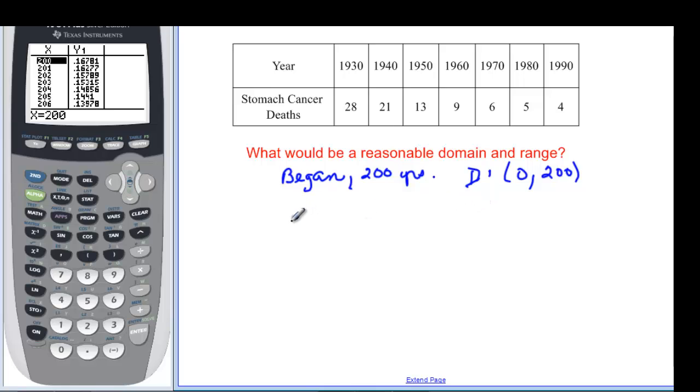For our range, we know that it started out with 28 per 100,000. And we hope to get down to 0. In 200, we knew that we were at about 0.16. So if we really wanted to have these things related, we'd have to say, this is where it began.